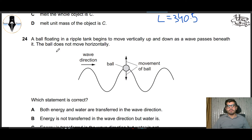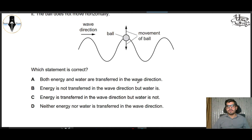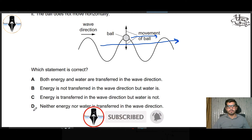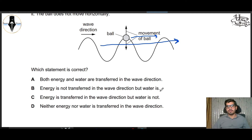Question 24: A ball floating in a ripple tank begins to move vertically up and down as a wave passes beneath it. The ball does not move horizontally. Which statement is correct? Energy is transferred in the wave direction but water is not transferred. So C part is correct.